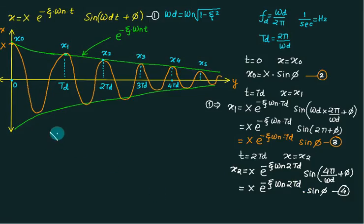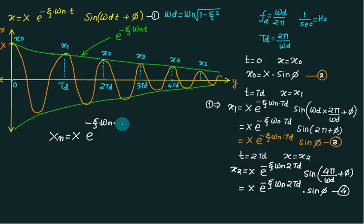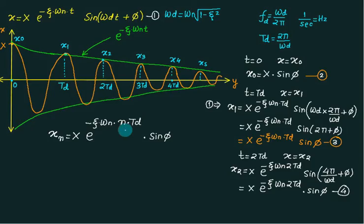In general, xn — the nth node — equals capital X times e to the power minus zeta omega n times n times td, multiplied by sine phi. Similarly, the previous node xn minus 1 equals capital X times e to the power minus zeta omega n times (n minus 1) times td, multiplied by sine phi.